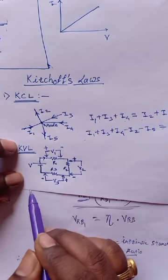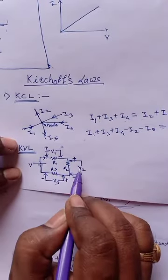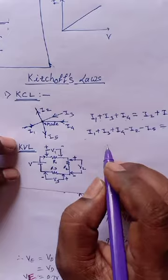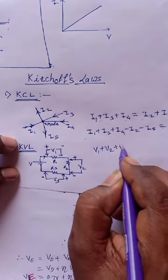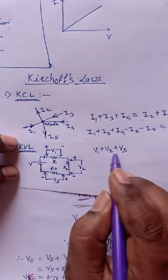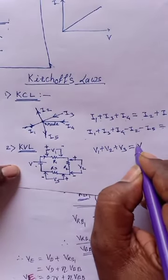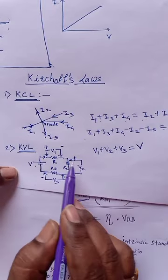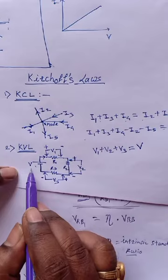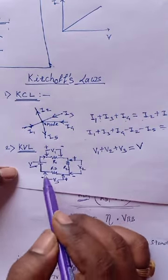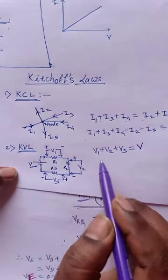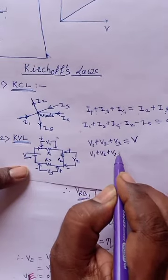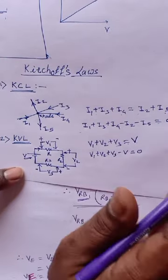KVL states that the algebraic sum of voltages developed in the closed circuit is equal to zero. So V1 plus V2 plus V3 are the developed voltages across the resistors. Since they have the same polarity, V1 plus V2 plus V3 equals the applied voltage V. Equivalently, V1 plus V2 plus V3 minus V equals zero.